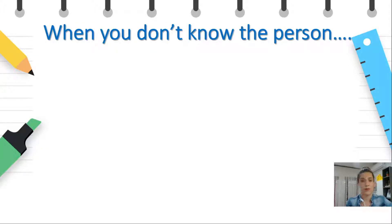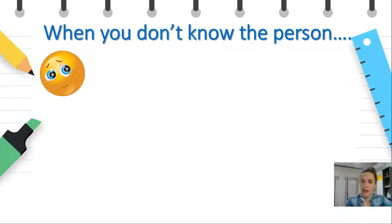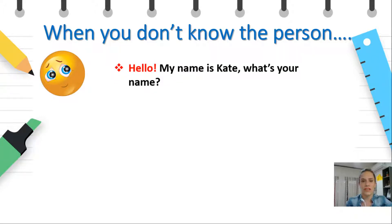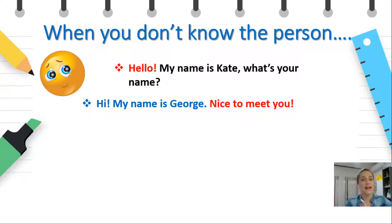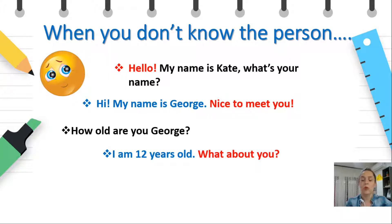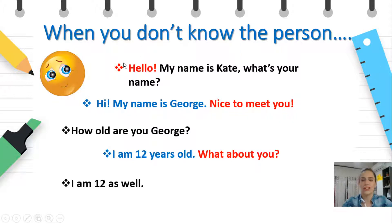But what happens when you don't know the person that you're meeting or talking to? We guess that you're shy at the beginning. Follow this conversation. Hello, my name is Kate. What's your name? Hi, my name is George. Nice to meet you. How old are you, George? I'm 12 years old. What about you? I'm 12 as well. So what did you notice here? We have the most common greeting word, which is hello.